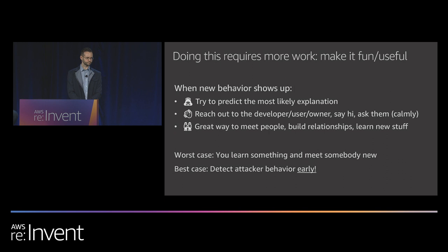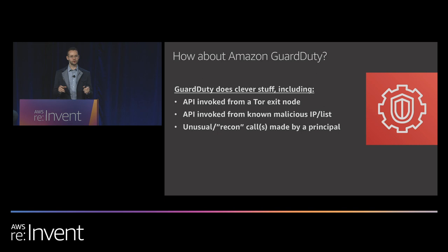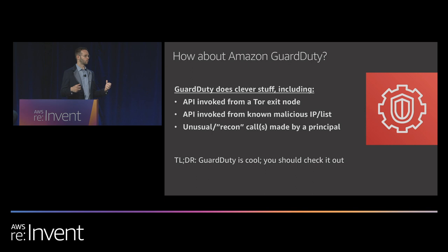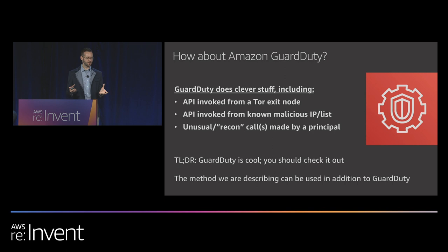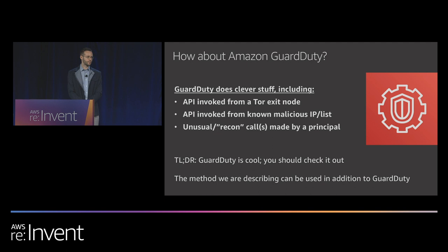Some of you may be wondering about GuardDuty. GuardDuty does anomaly detection — it can tell when an API is invoked from a Tor exit node or a known malicious IP, and it detects unusual or recon calls made by a principal. GuardDuty is really cool and you should check it out. But we still think there's value in combining what we're talking about here with GuardDuty, because GuardDuty is based on learning and it's black box — you don't have visibility into what it's learning and why. The approach we're talking about is completely white box. You can see everything, tune it according to your business logic, and you get the opportunity to decide what's normal or not.